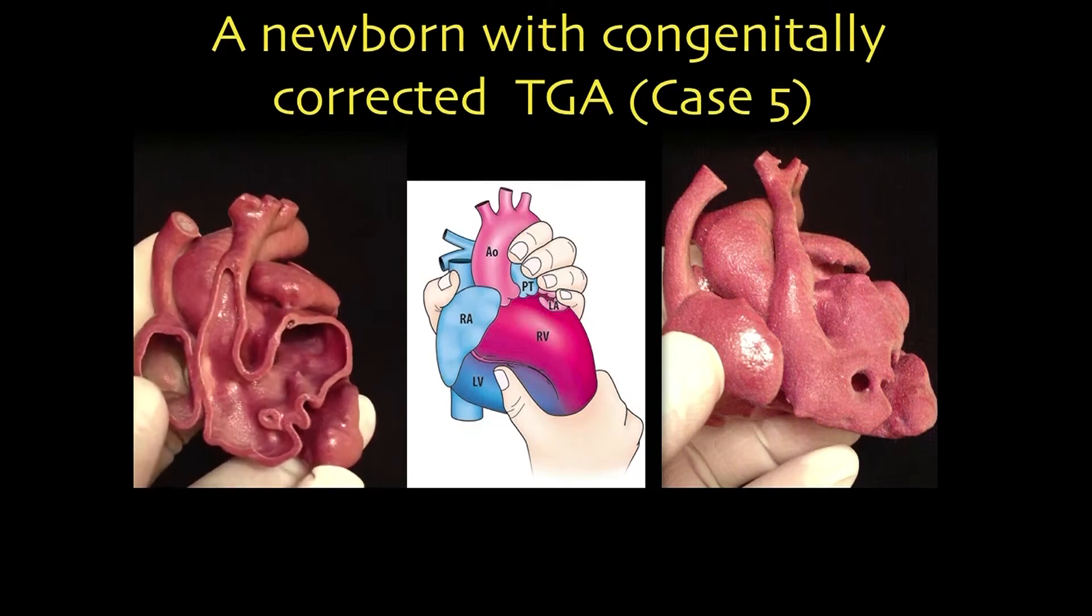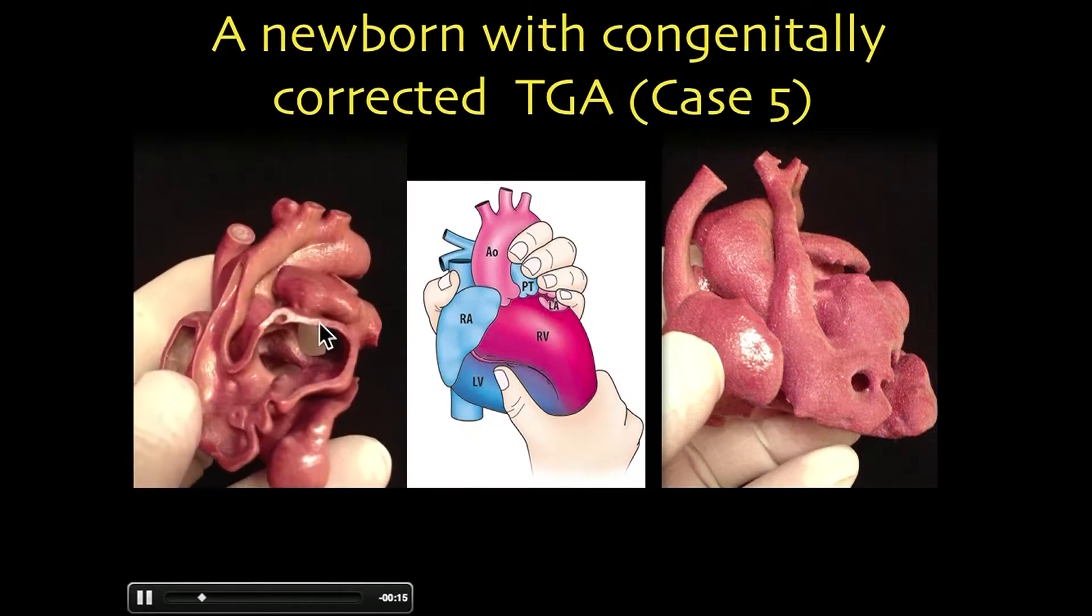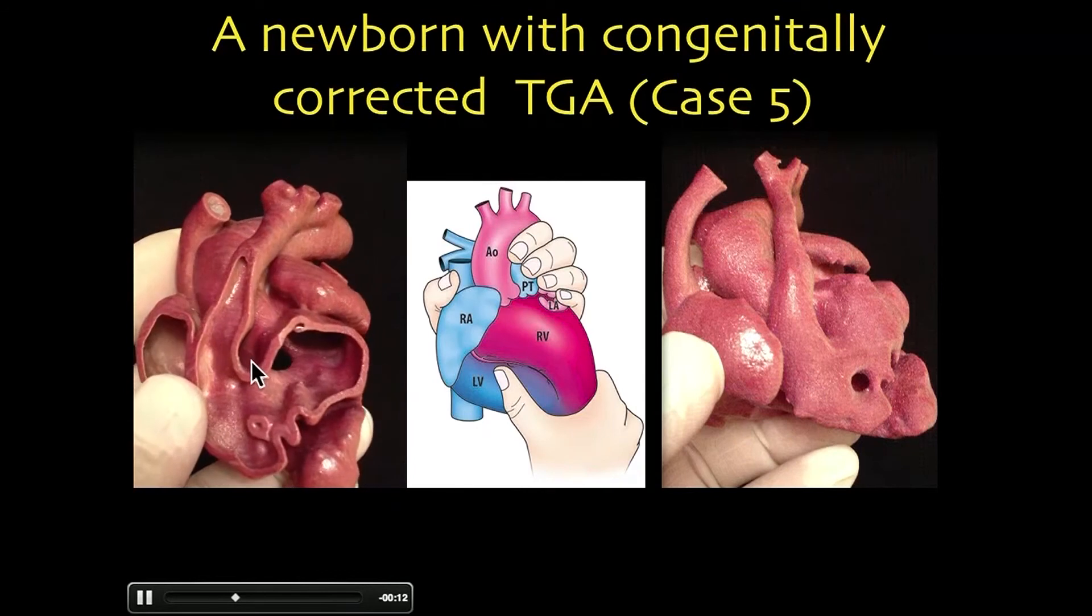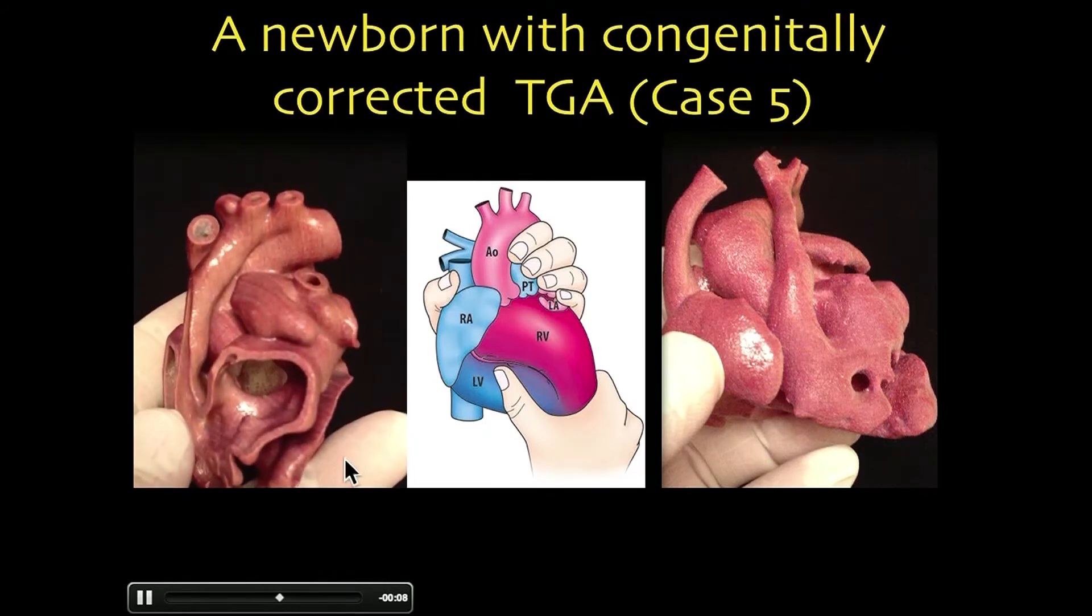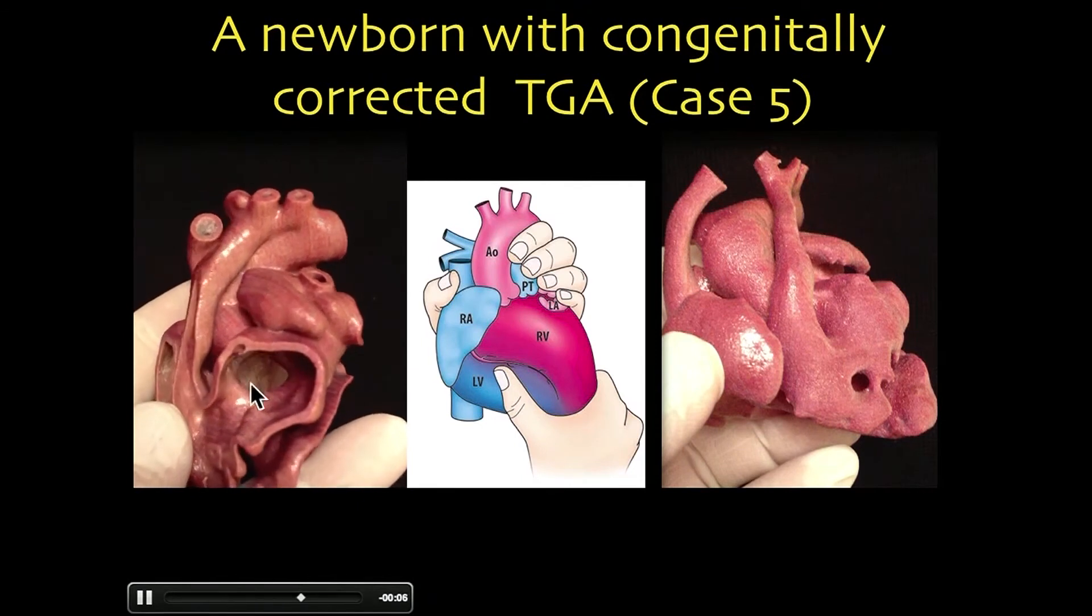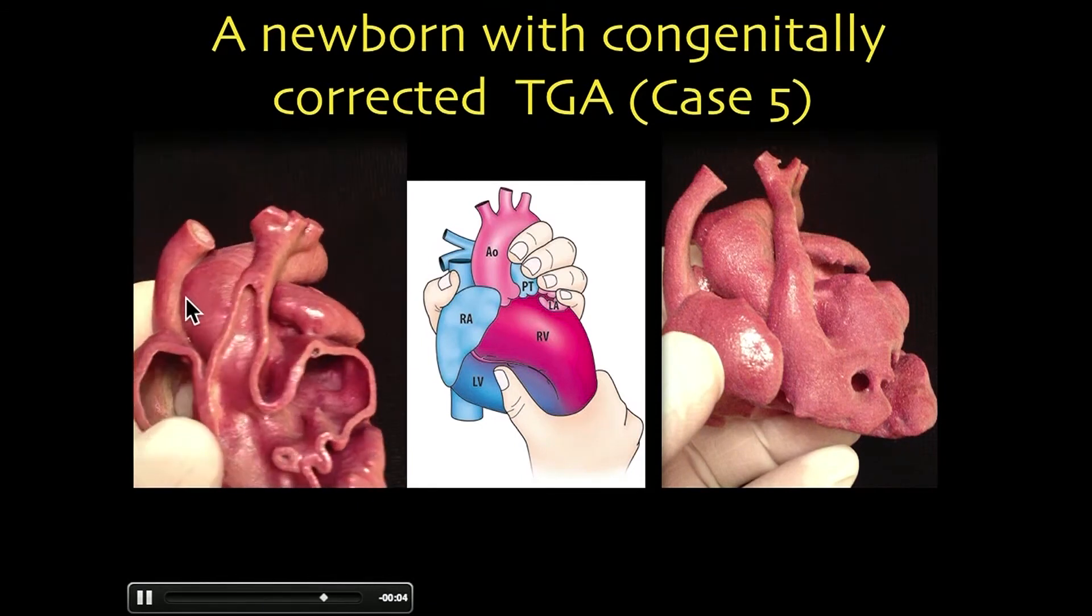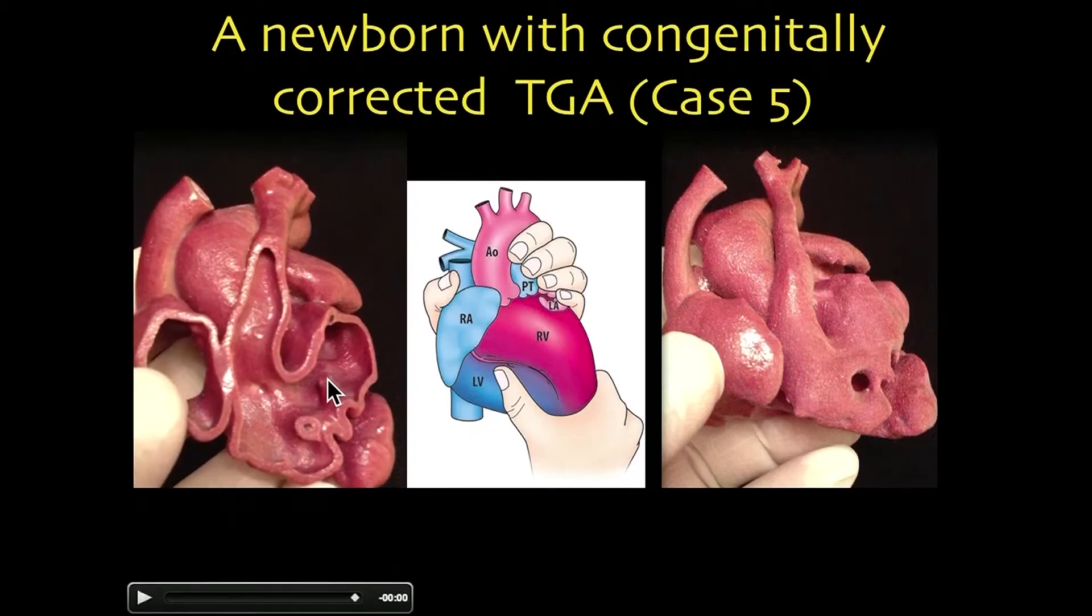So anyway, inside, you can see that the right ventricle is here. This is the tricuspid valve. VSD is here. Aorta arises from here. The VSD is here. But here, from the left ventricle, pulmonary trunk is going to here, behind the aorta.